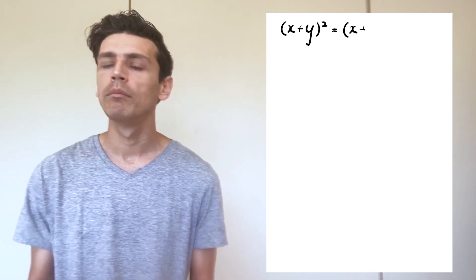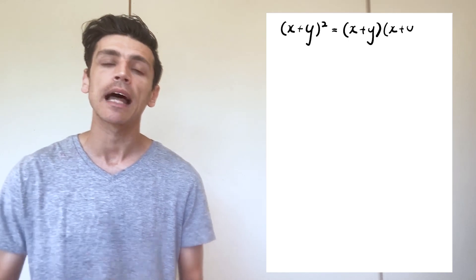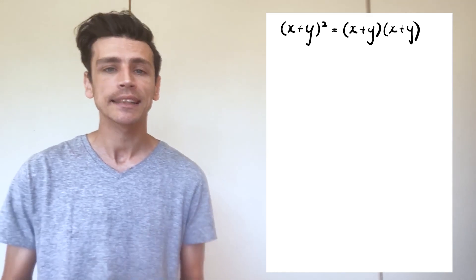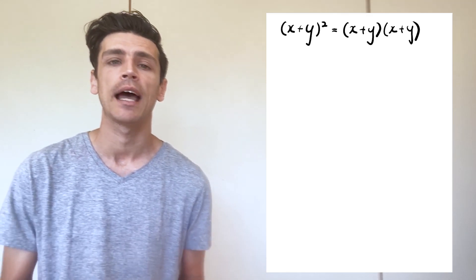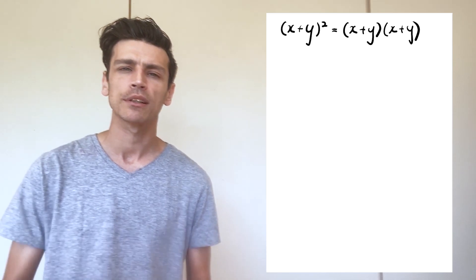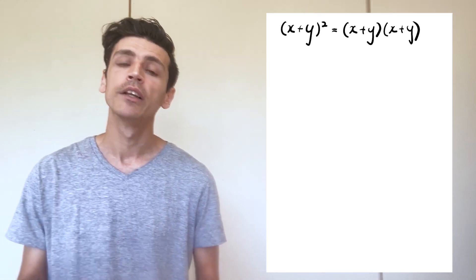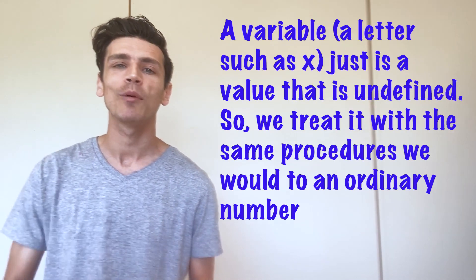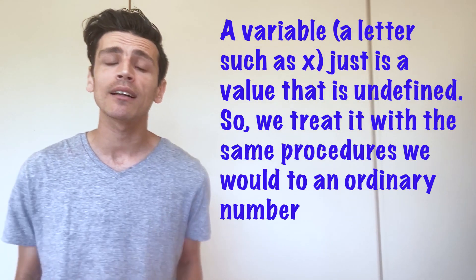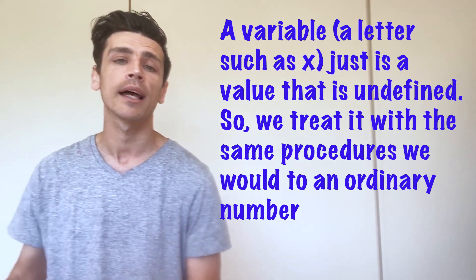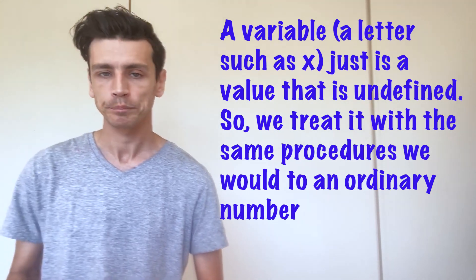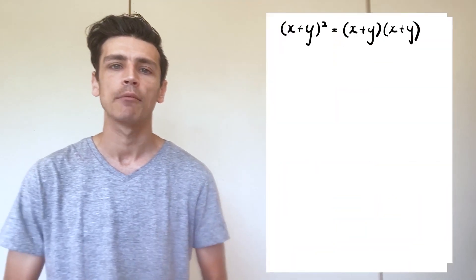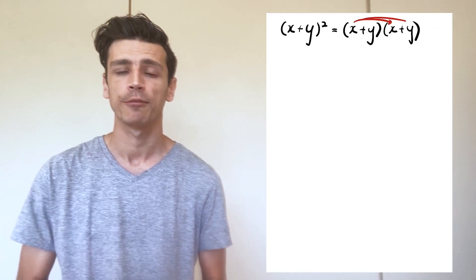Many people when we see multiple variables start to think that we must do something completely different. The truth is we don't - we follow the exact same process as we did when we have numerical values. A variable, a letter, just is a number that we don't know yet, so you just treat it like you would any other normal number.